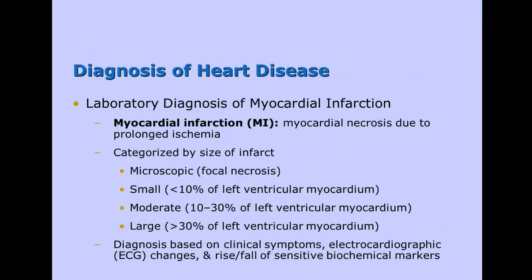As laboratorians, how do we help physicians figure out what is wrong with the patient? A big part of what we can help diagnose is whether the patient had a myocardial infarction and potentially when, and we can also tell if they might have congestive heart failure. A myocardial infarction is myocardial necrosis — tissue death — due to prolonged ischemia, which is lack of oxygen. So a heart attack can be a lack of oxygen causing tissue death.